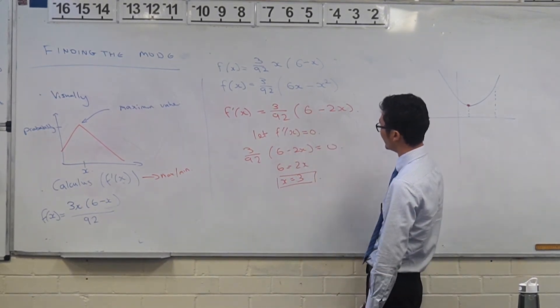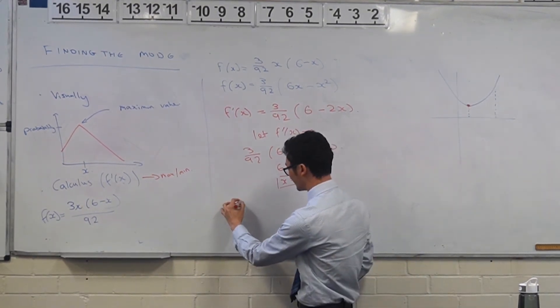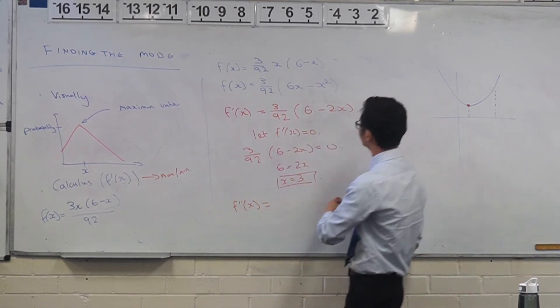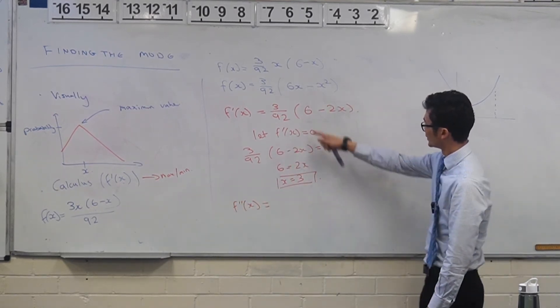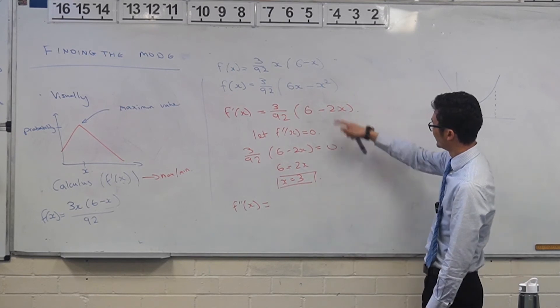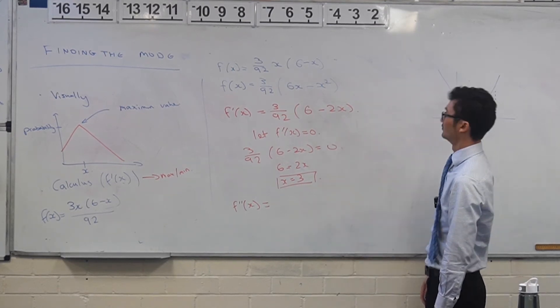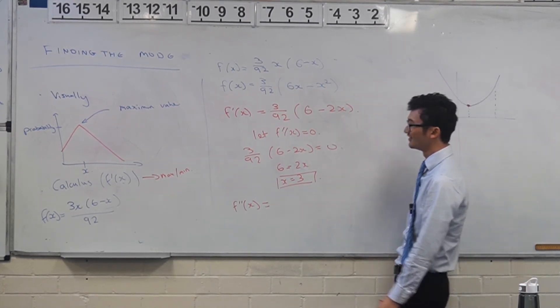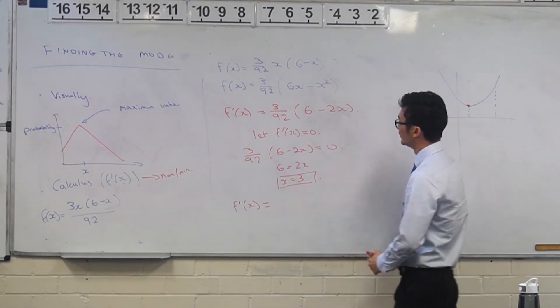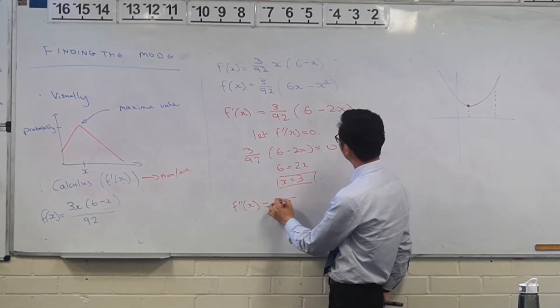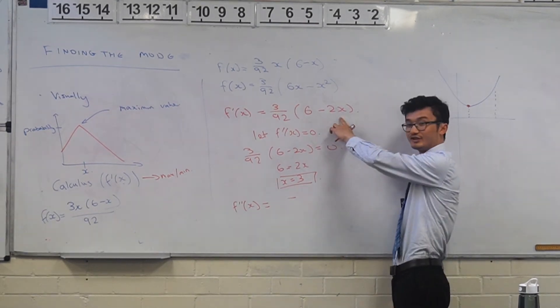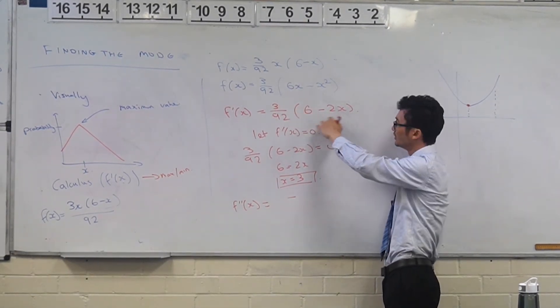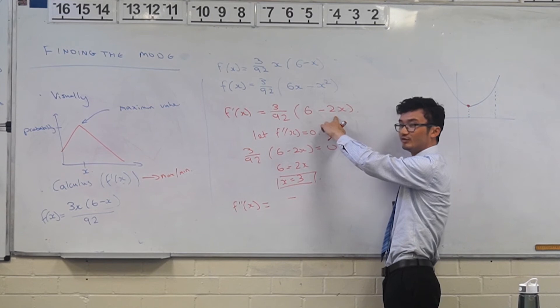So if you differentiate this again, what do you get? f double dash x is - well this is just a constant, so that goes away. That becomes minus two.